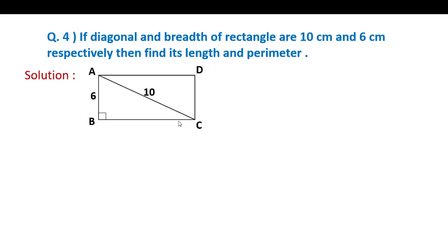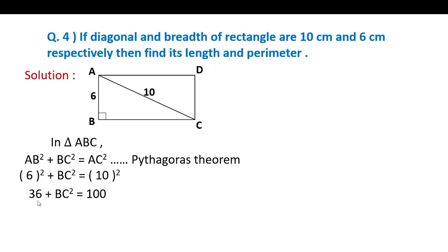Look, triangle ABC is a right angle triangle. We can apply Pythagoras theorem. AB square plus BC square is equal to AC square. Substitute the values: 6 square plus BC square is equal to 10 square. 36 plus BC square is equal to 100. Transfer 36 to the other side: BC square is equal to 100 minus 36. That is 64. BC square is equal to 64. Take square root: BC is equal to 8 cm.